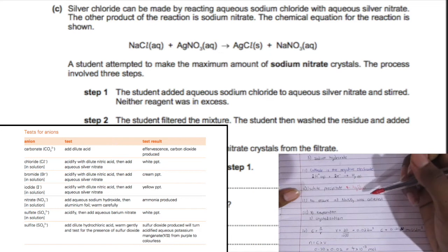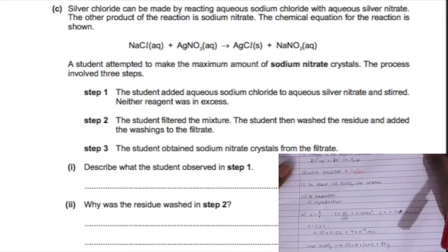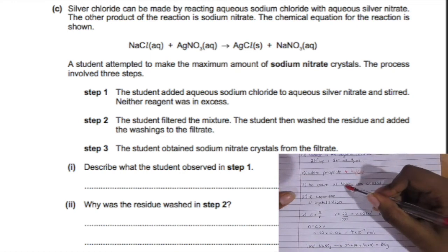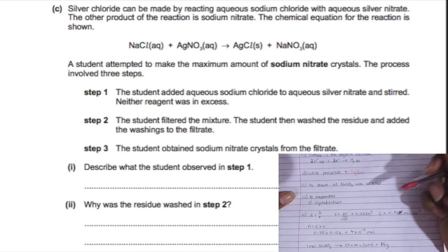In the second step, the student filtered the mixture, then washed off the residue and added the washing to the filtrate. Why did he do that? He did that to make sure that all of the sodium nitrate ended up in the filtrate and that he didn't miss any of them.